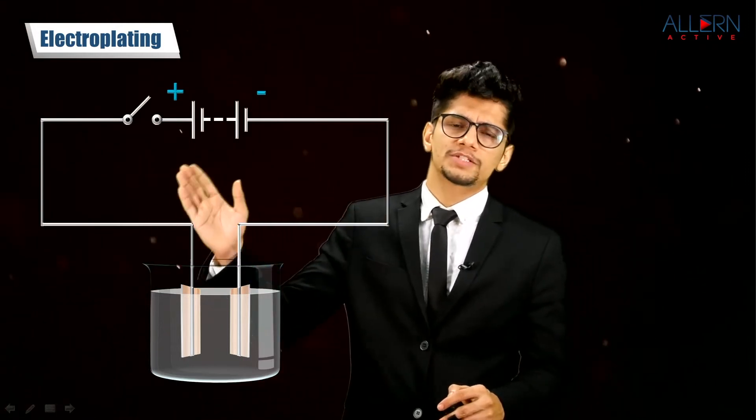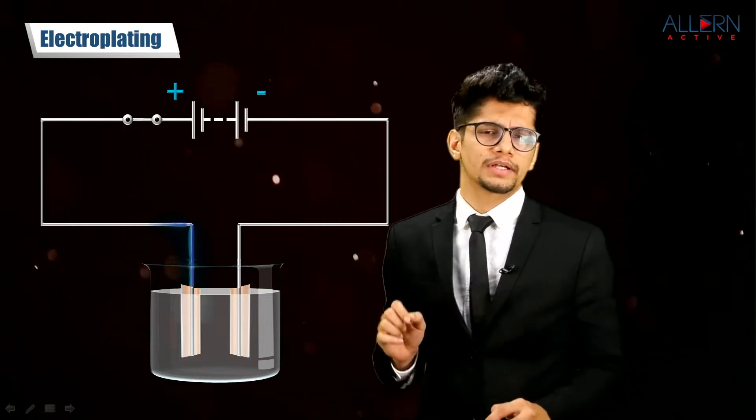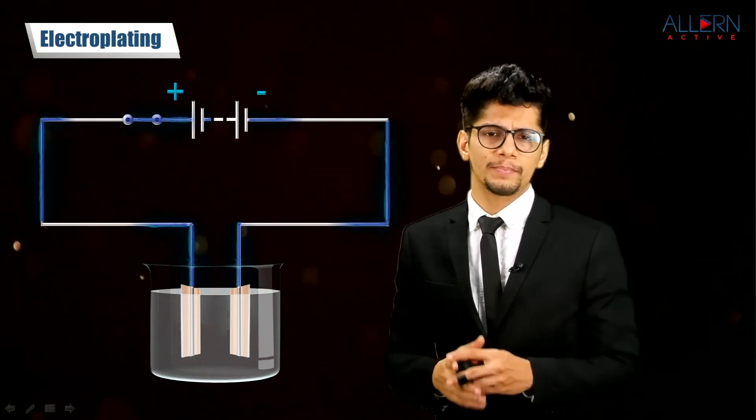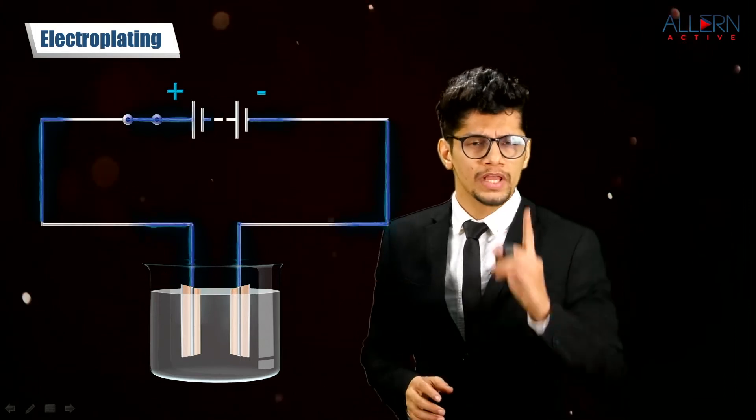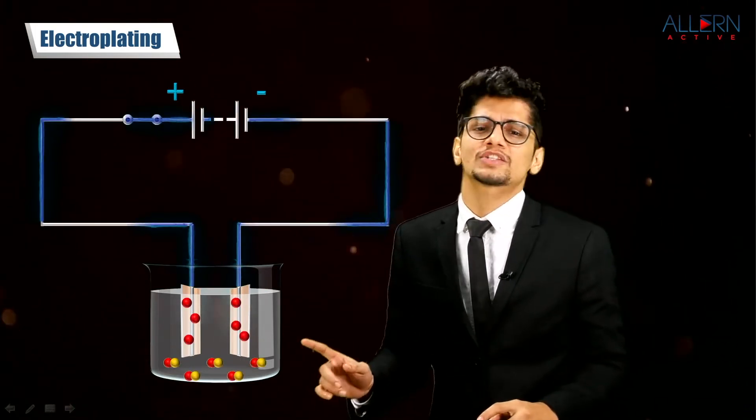We have two terminals, positive and negative. We switch on the circuit and electric current will pass through the circuit because this is a conducting solution.